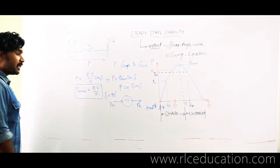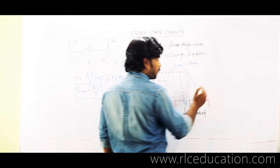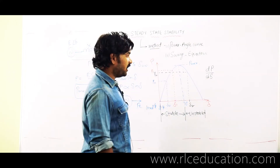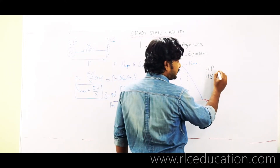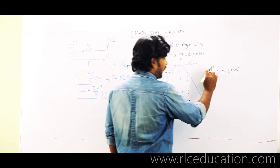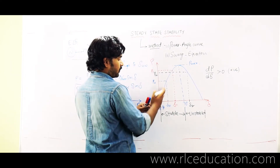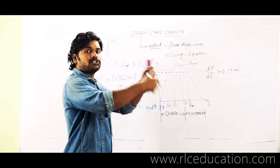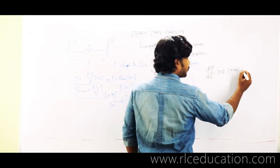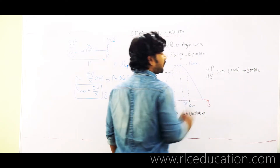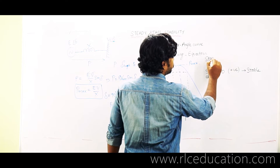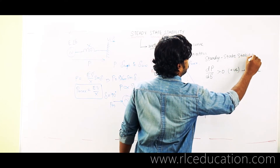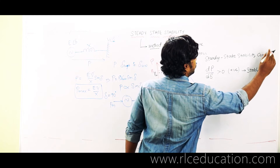Now, what is the basic mathematical characteristic observable in the stable zone? In the stable zone, as the load is increasing, delta is also increasing — that means dP/dδ, the change in power per change in delta, is greater than zero, i.e., positive. Looking at the power angle curve, the power curve has a positive slope with respect to delta. As delta increases, power output is also increasing. This condition is called the stable condition — the steady state stability condition.